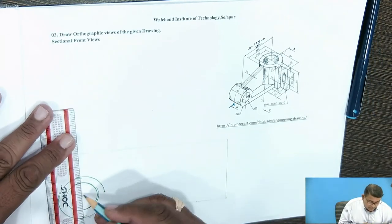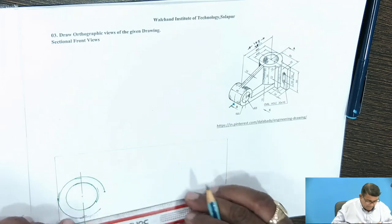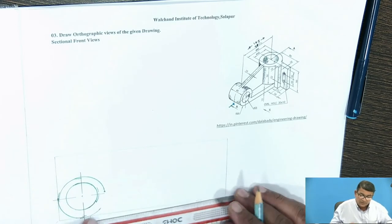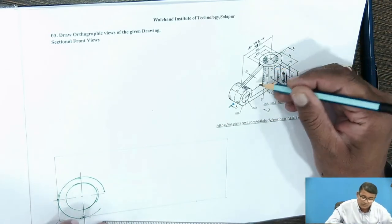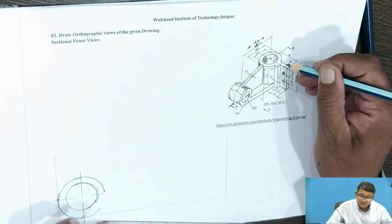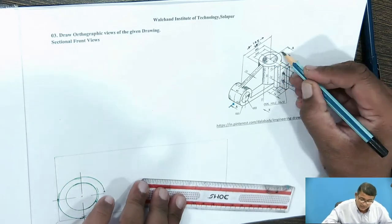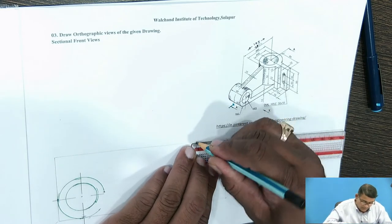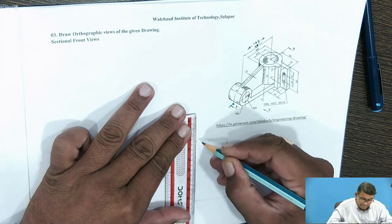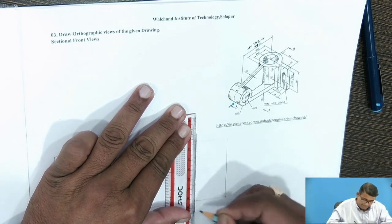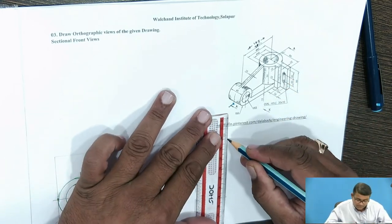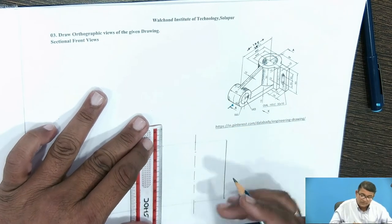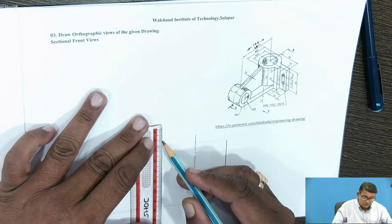Draw the center line for this one. Then this rib is there. We have to cut this portion — this inclined rib is there and the cylinder is to be seen. That cylinder center line is given as 560, meaning 30 mm radius. From this end you travel 30 mm and draw the center line. This portion is to be 30 mm.